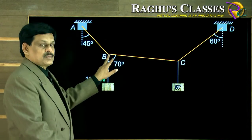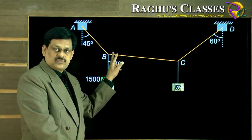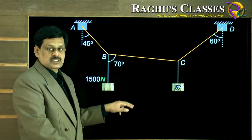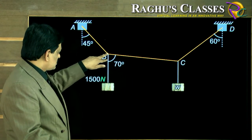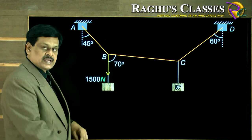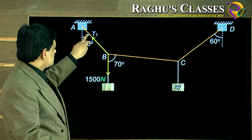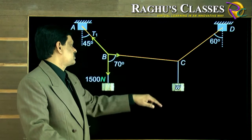Now let us consider the point B which is under the action of three forces. One is the weight, the other is tension in the wire AB, and tension in the wire BC. So let us represent the forces: the weight acting downwards whose value is 1500 Newton, and let the tension in this wire is a pull T1, and the tension this wire is pulled to the right T2.